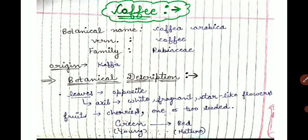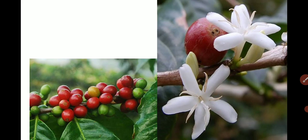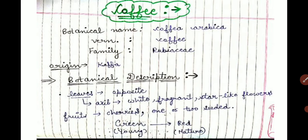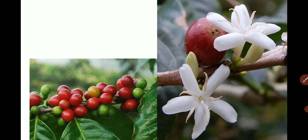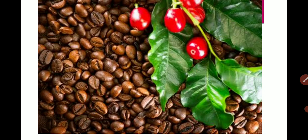Now we will talk about the botanical description of coffee. The plant is about 3 to 4 feet tall, with oppositely arranged leaves. Star-like white fragrant flowers are present in the axil of leaves. The fruits are called cherries and are generally one or two seeded. Young cherries are green and as they mature the color changes to red.